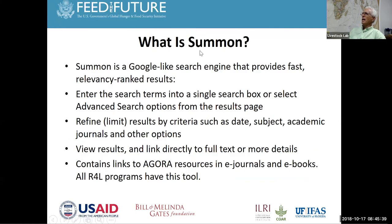Summon is a Google-like search engine that provides fast, relevancy-ranked results. You enter the search term in a single box, and there is also an advanced search. You can refine or limit results by basic criteria such as date, subject, academic journal, and other options. You view the results and can link directly to the full text. It contains links to resources available by country in e-journals and e-books, and all research-related programs share this same tool.